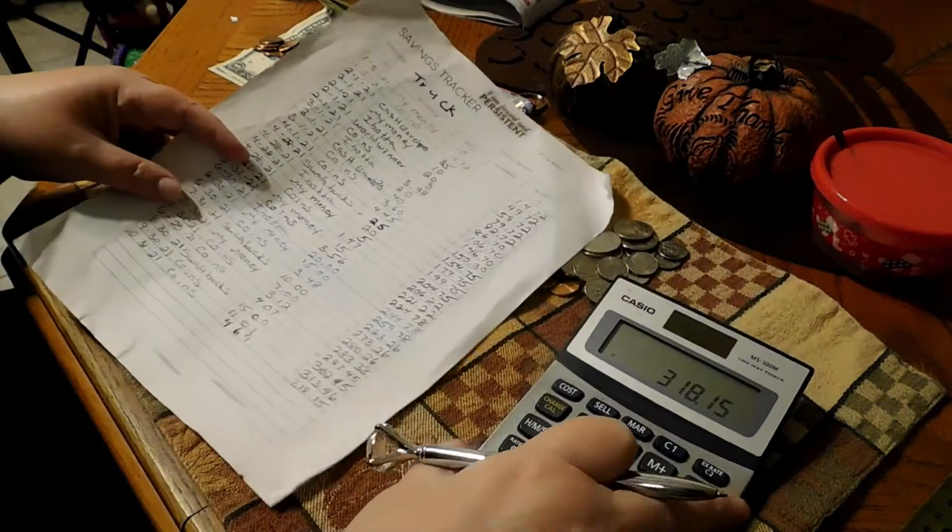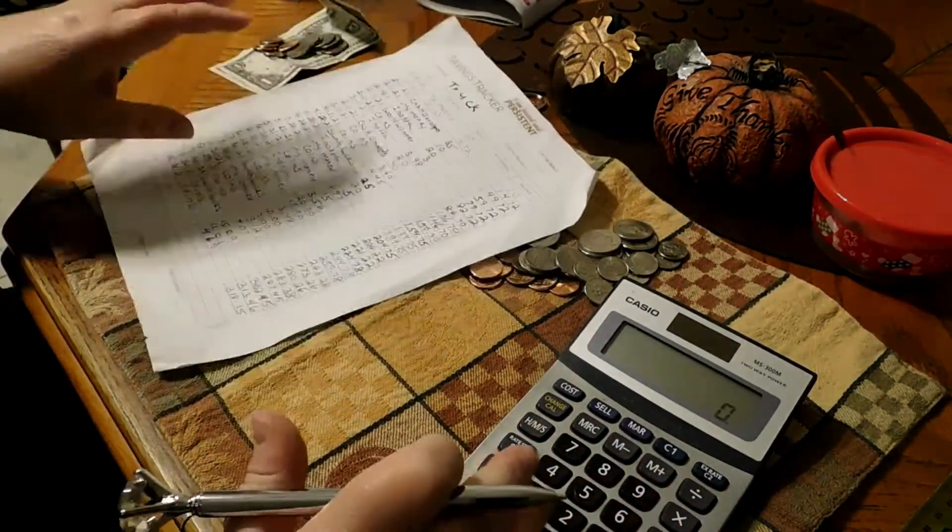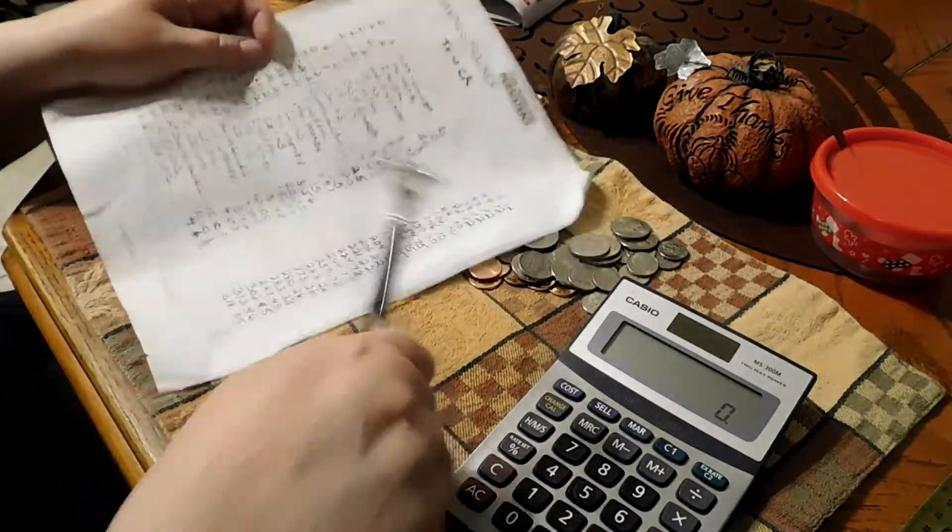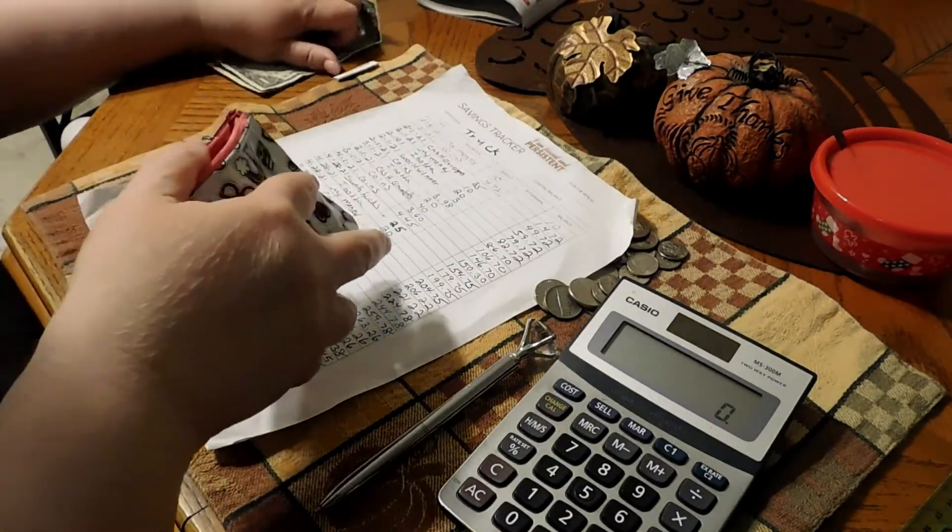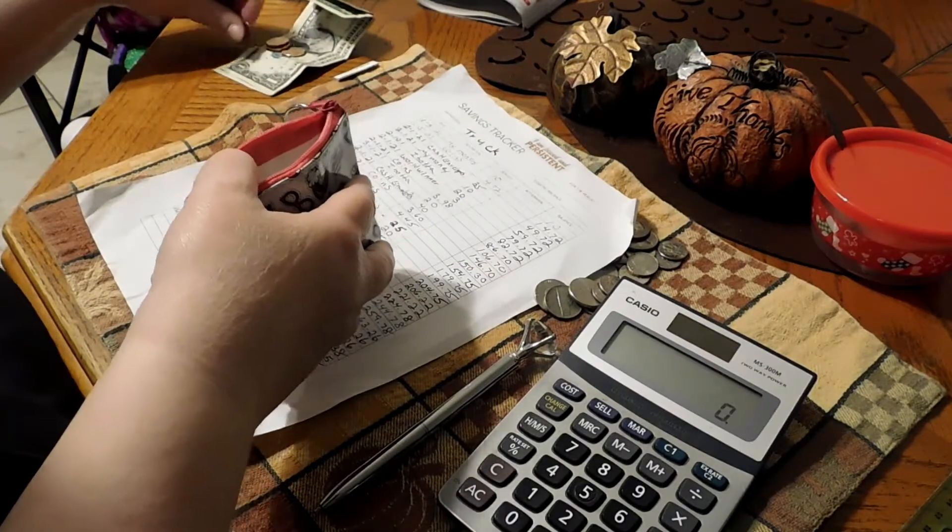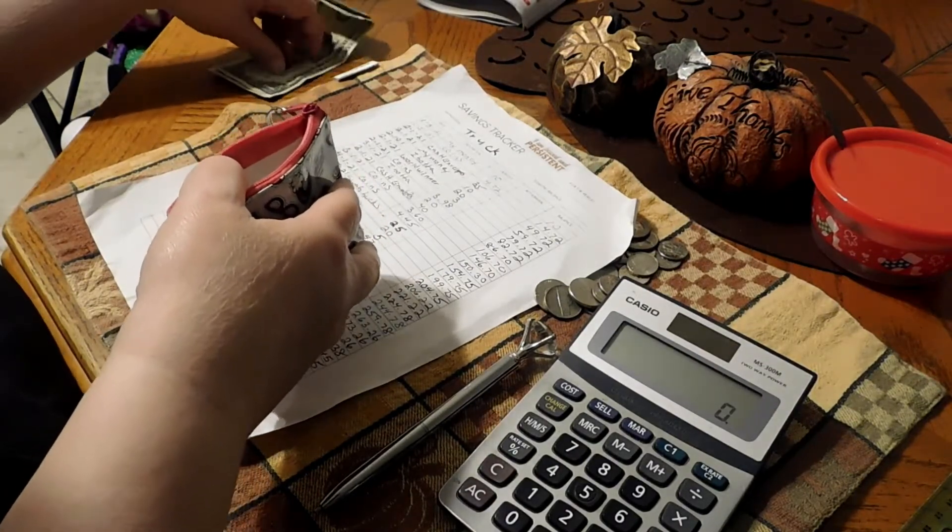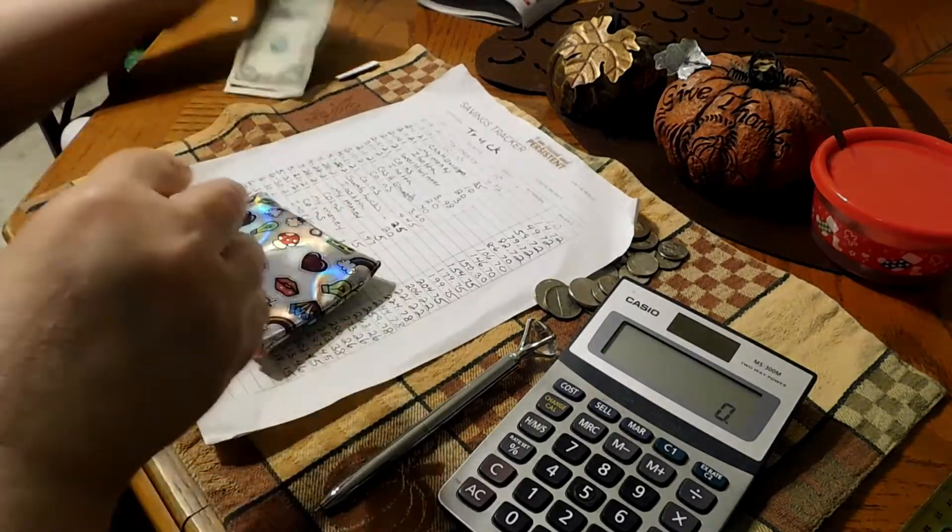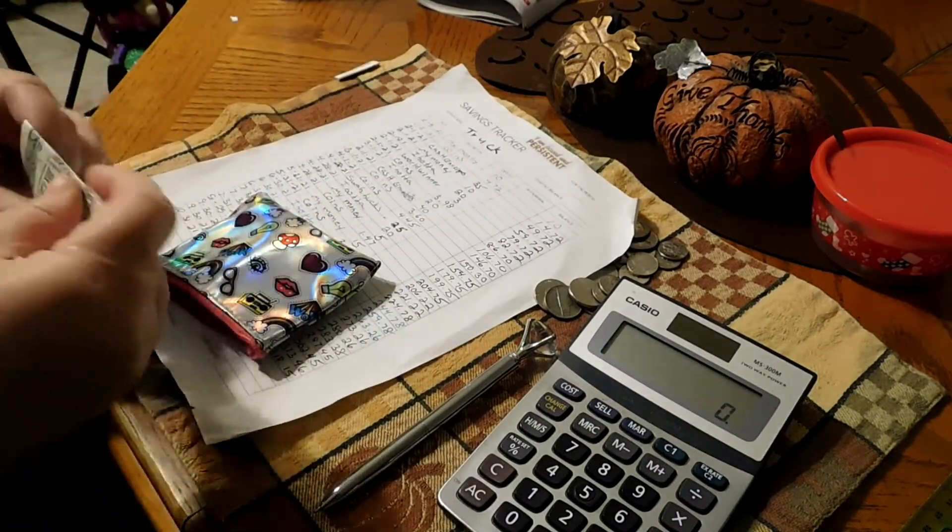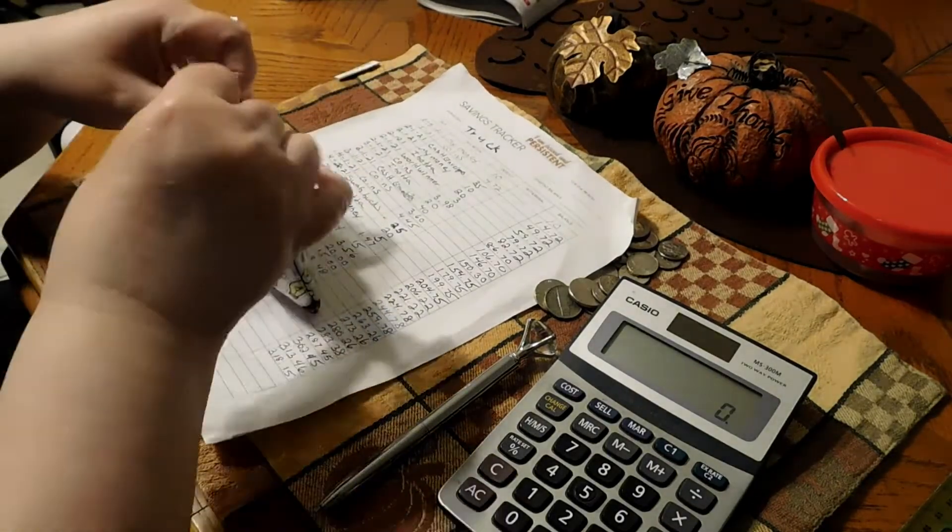But yeah, can't complain. This will go in my Mickey canister there. This goes back in here. So we're going to put that back in there and I use this money to go to Dunkin or Starbucks and I use it for tips or anything like that.